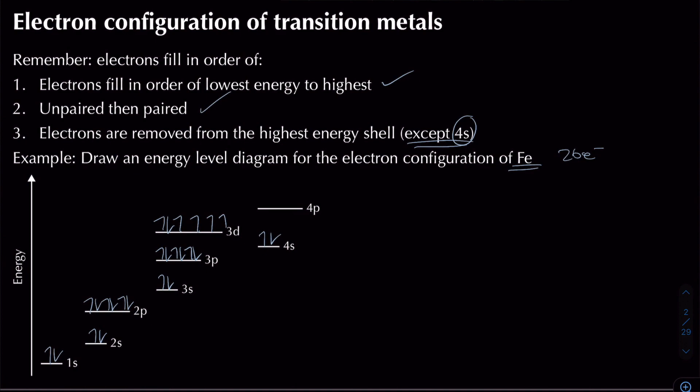To form Fe2+, we remove two electrons from the highest energy shell — in this case the 4s subshell. Does iron form a transition metal? The answer is yes, because after removing those two 4s electrons, iron still has a partially filled d subshell.